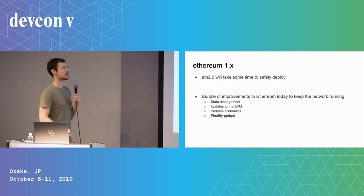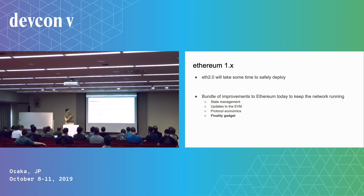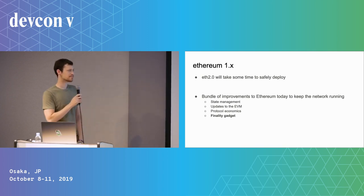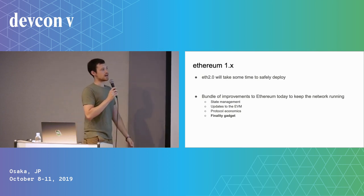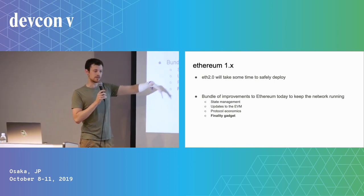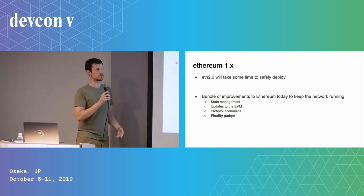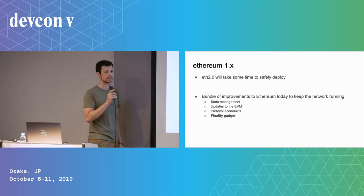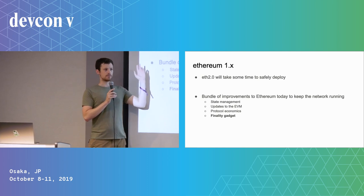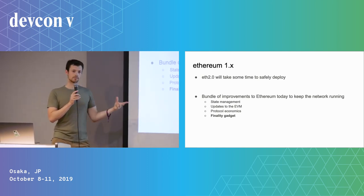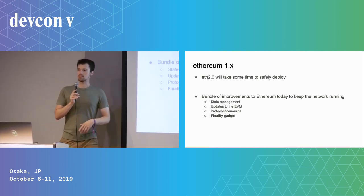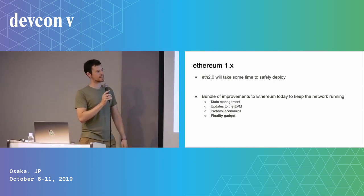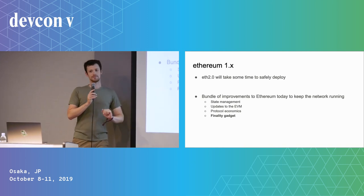In the meantime, there's the chain we have today, and we have a bundle of initiatives called Ethereum 1x. This includes state management work — like state fees to help with state growth — updates to the VM such as deploying EWASM and pre-compiles to accelerate computation, protocol economics changes like EIP-1559 which changes how transaction fee markets work, and finally the finality gadget.